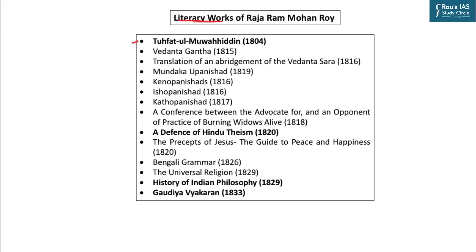His literary works include Tofatul Muahideen, Vedanta Grantha, translation of an abridgment of Vedanta Sara, and works on Mundaka Upanishad, Keno Upanishad, Isho Upanishad, and Katho Upanishad. He also wrote A Conference between the Advocate for and an Opponent of the Practice of Burning Widows Alive, A Defence of Hindu Theism, The Precepts of Jesus: The Guide to Peace and Happiness, Bengali Grammar, The Universal Religion, History of Indian Philosophy, and Gaudiya Vyakaran.